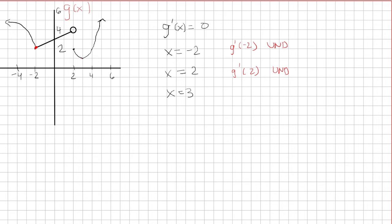And at x equals 3, if we take a tangent here, we see that the tangent is a horizontal line. And at x equals 3, the graph is smooth. So we would say that the derivative at 3 is 0.